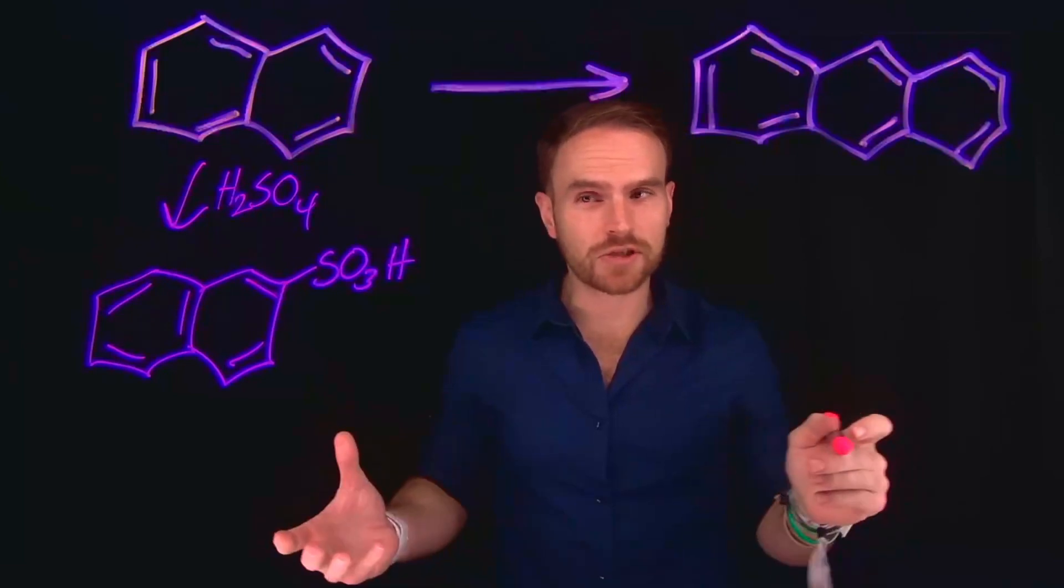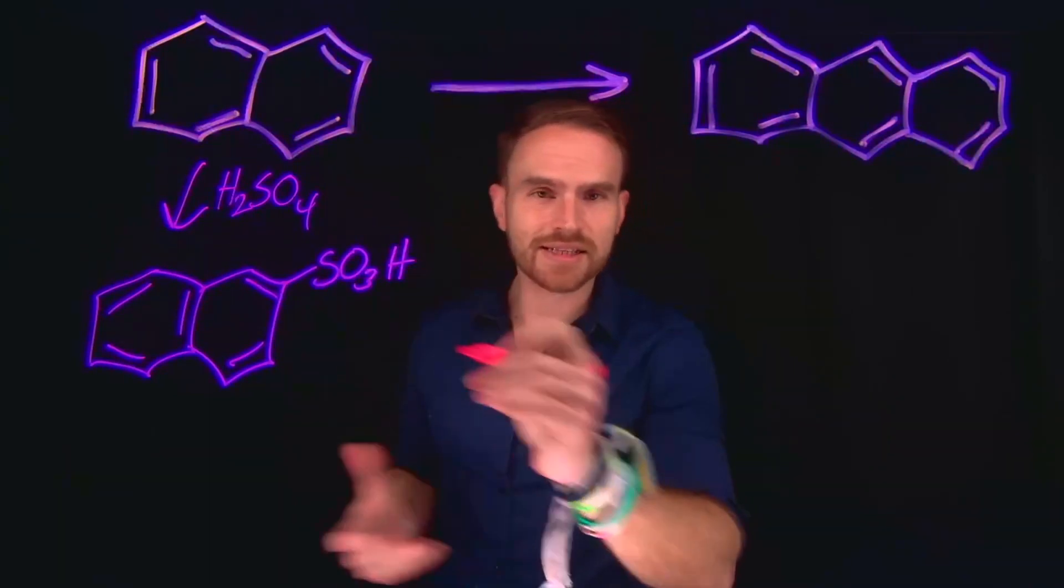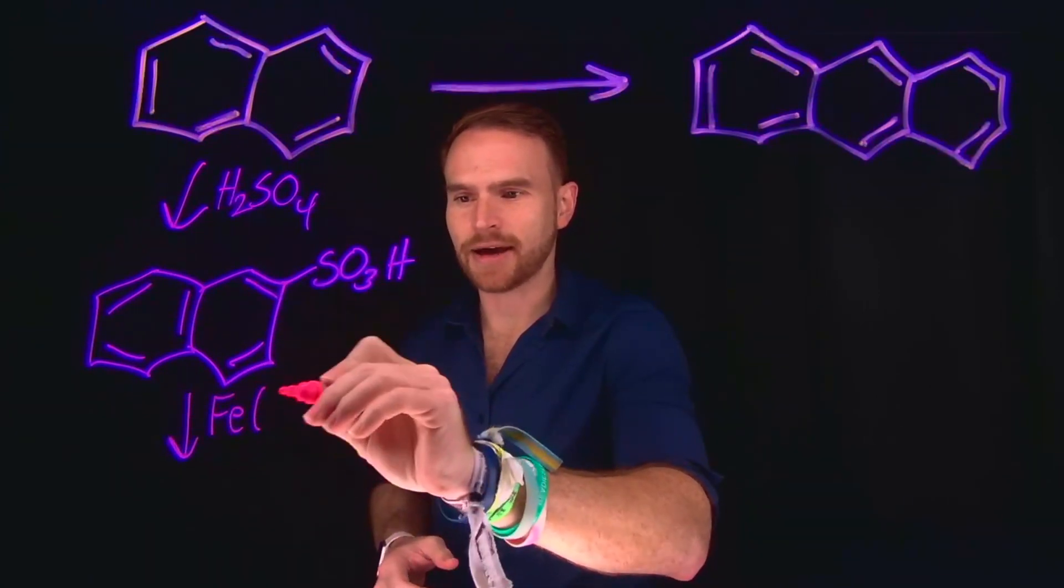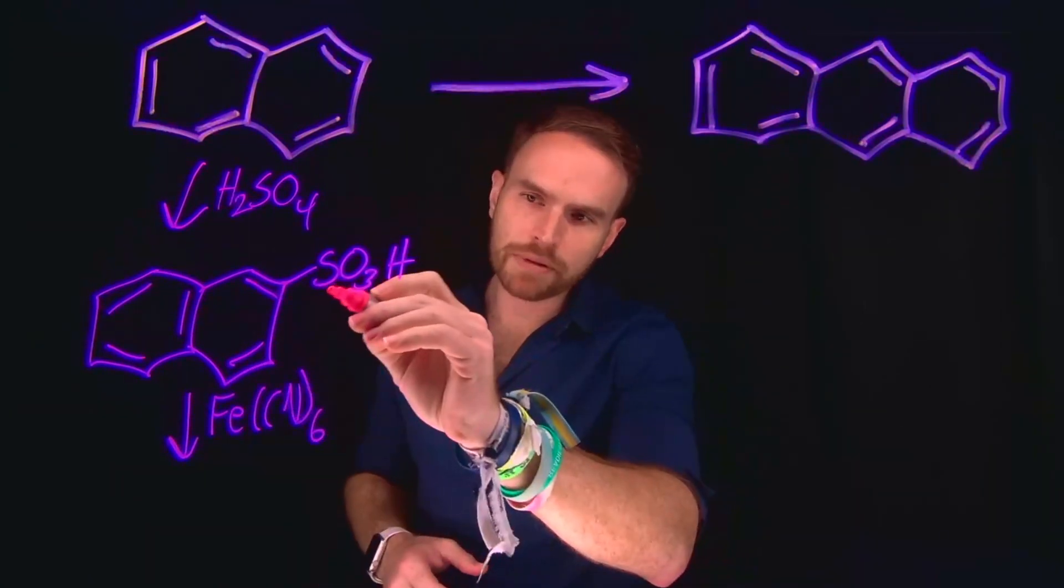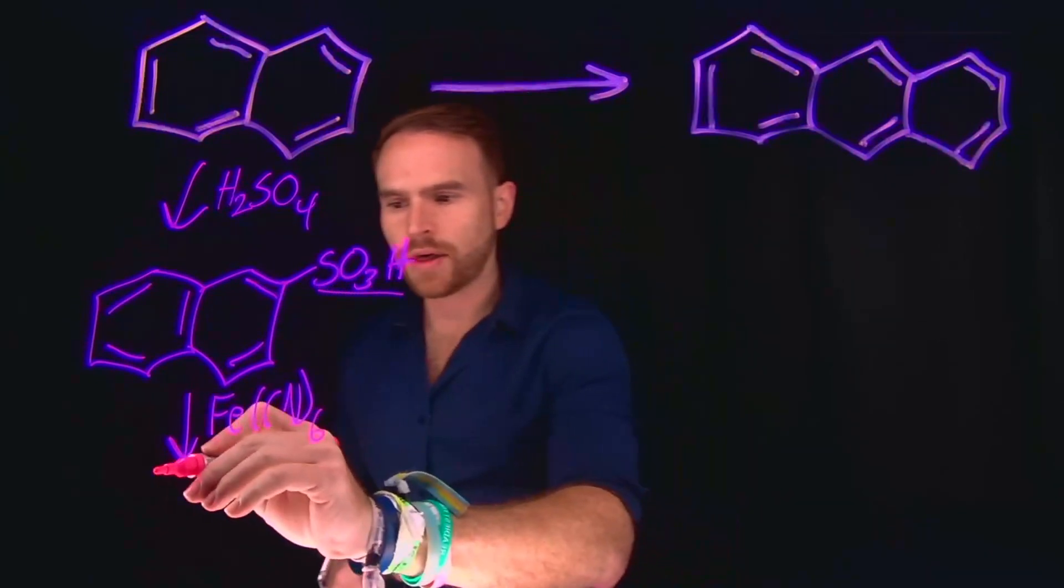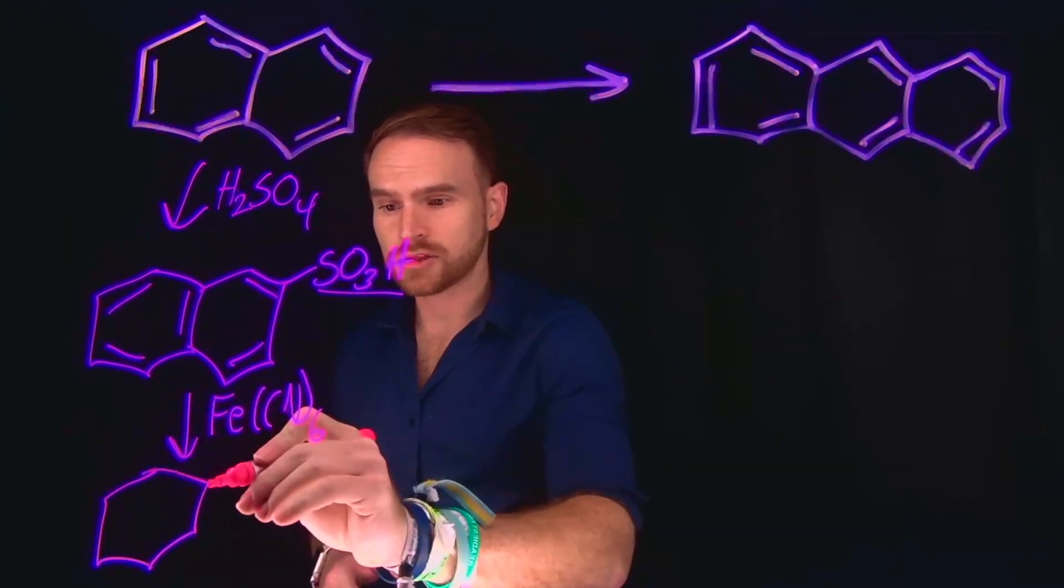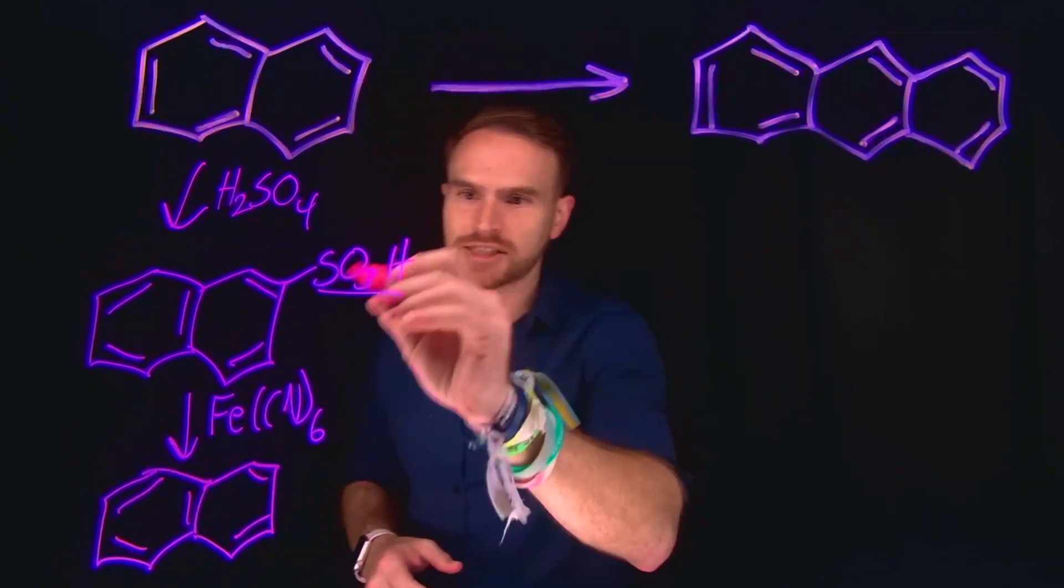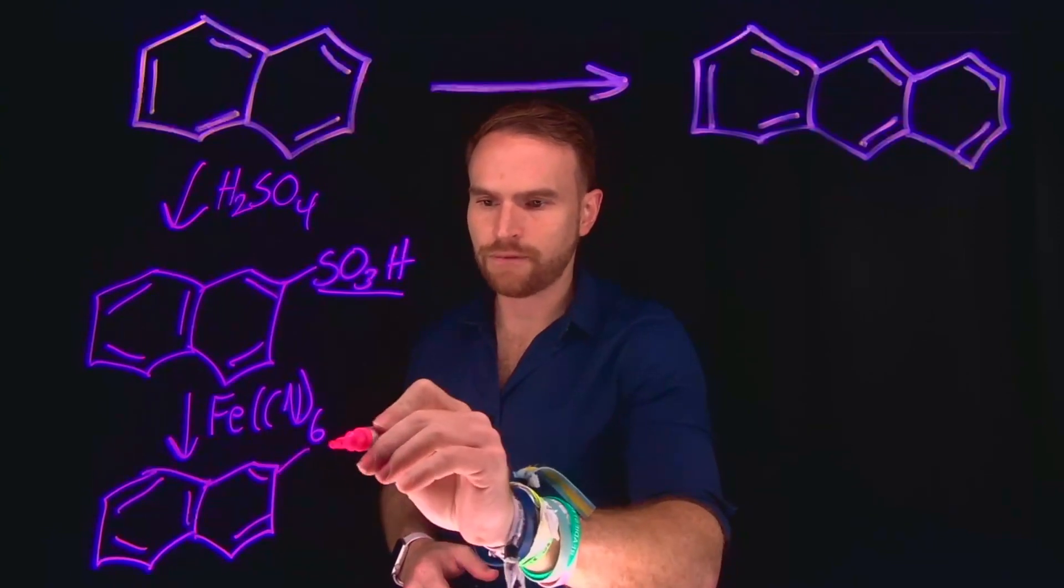From here, we can do a substitution reaction where we replace this sulfonate group with cyanide. We can add something like iron cyanide and that will replace this sulfonate group with a cyano group. CN is called the cyano group. This is a reaction that you can do to substitute this sulfonate group for CN.